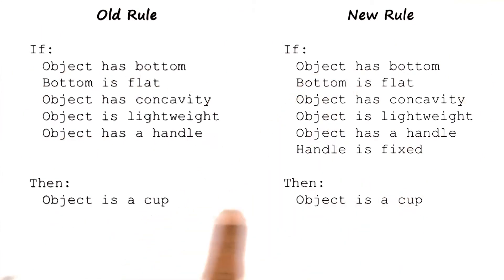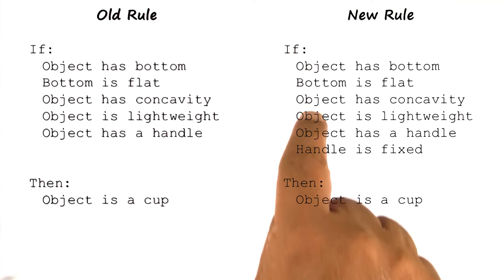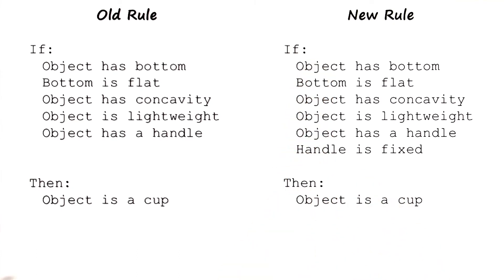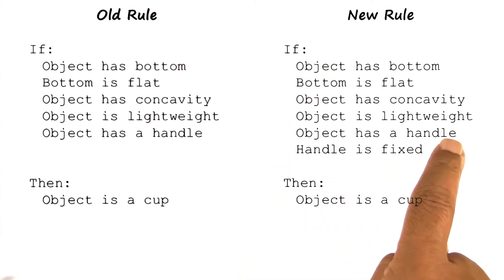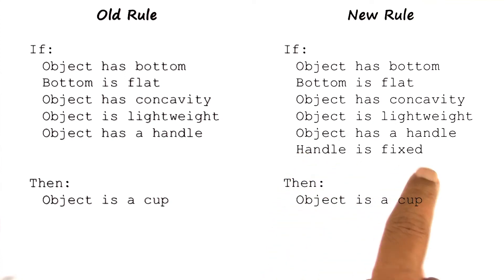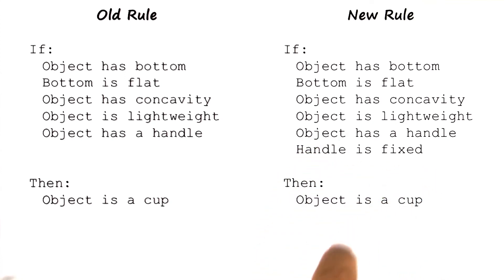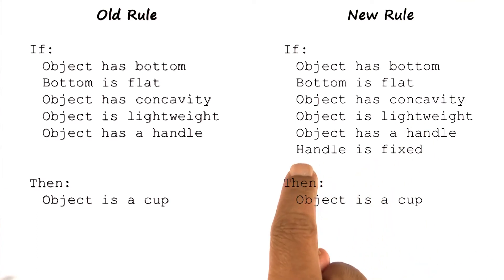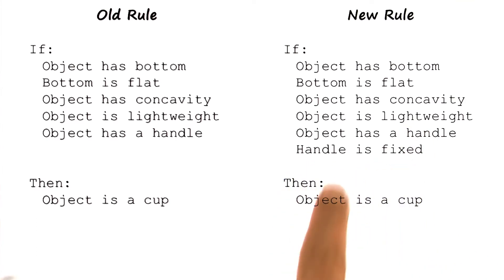Note that in this method of concept revision, the number of features in the if-clause may become very, very large, very quickly. Here we have 'object has a handle' and 'handle is fixed.' We could keep on adding additional features — the interior is blue — that cover all the positive experiences. The difficulty is, at the present time, there is no understanding for why the fact that 'handle is fixed' is an important part of the cup definition.